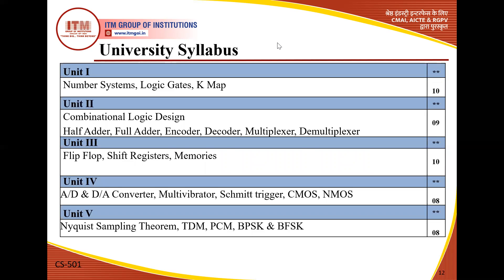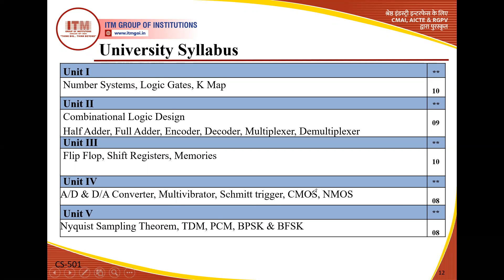Highlighting the university syllabus: Unit 1 covers number systems, logic gates, and K-map. Unit 2 covers combinational logic circuits — half adder, full adder, encoder, decoder, multiplexer. Unit 3 covers sequential circuits — flip-flops, registers, and memories. Unit 4 covers analog-to-digital and digital-to-analog converters, multivibrators, Schmitt trigger, CMOS and NMOS — since voice is analog but mobiles understand only digital, converters are essential. Unit 5 covers communication topics like sampling theorem, TDM, PCM, and modulation.